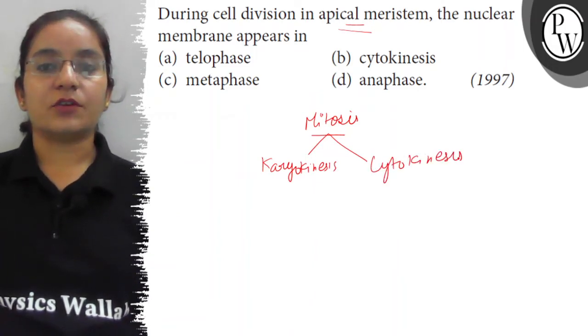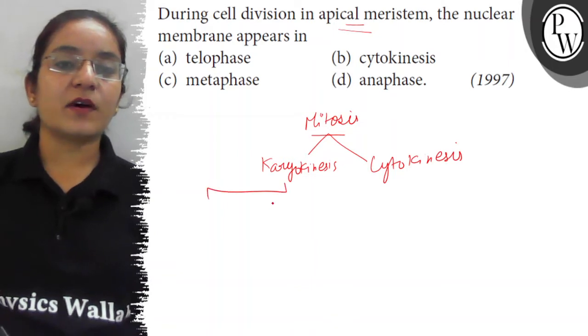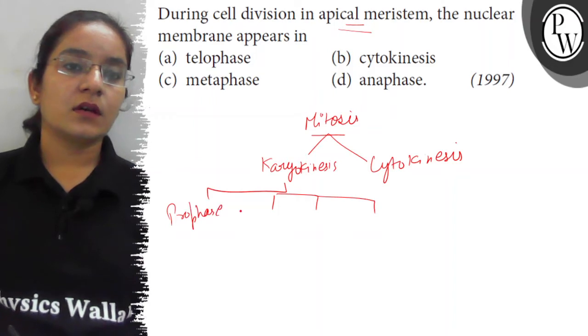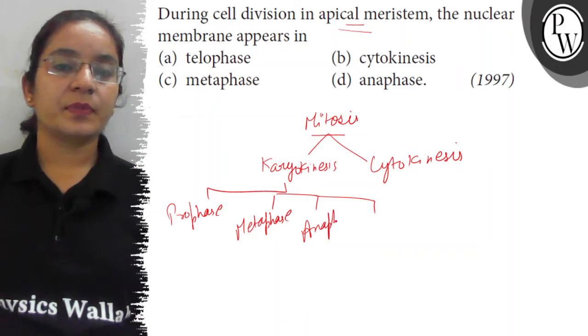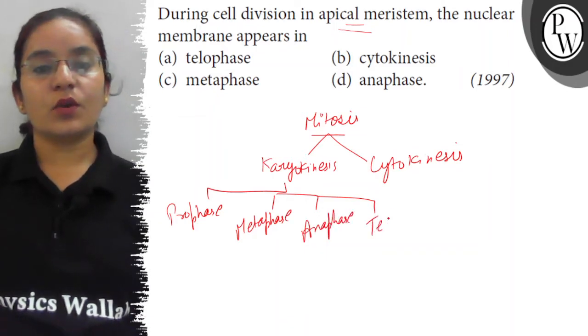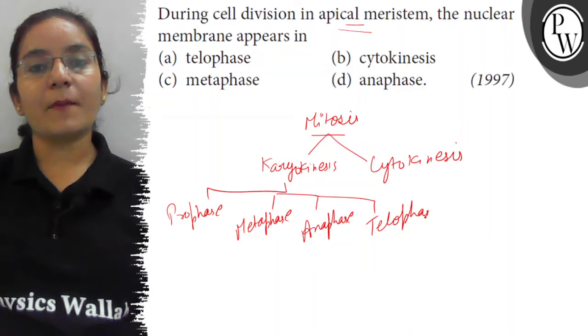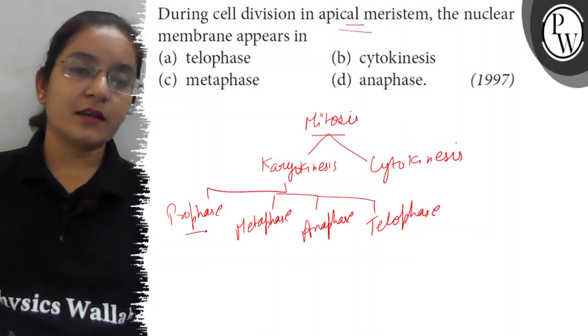Karyokinesis is further divided as prophase, metaphase, anaphase, and telophase. During prophase, the nuclear membrane disappears.